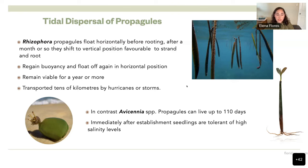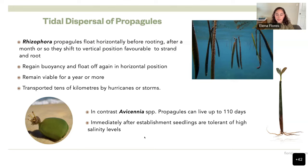They can be transported long distances — another way to disperse mangroves and colonize other areas. The black mangrove can live up to 110 days floating in the water until it attaches to the substrate, and they can tolerate high salinity levels once attached, unlike most plants which would die at those levels.